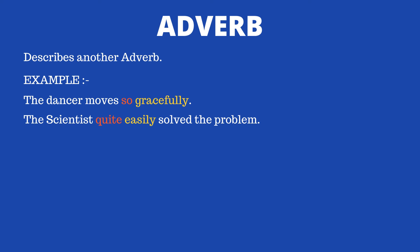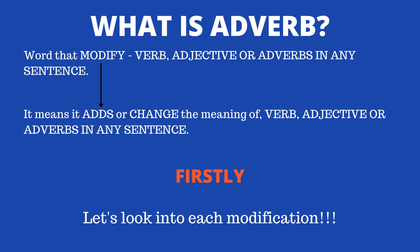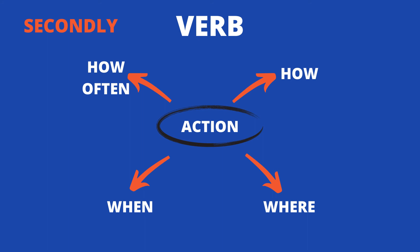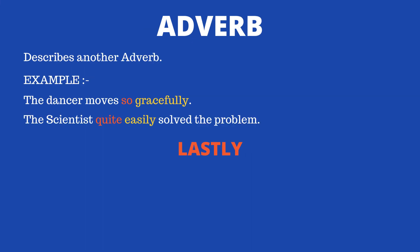Let's revise what we've covered today. First, we talked about what an adverb is. Second, we talked about the four ways an adverb modifies a verb: how, when, where, and how often. Third, we talked about how an adverb modifies an adjective. And lastly, we talked about how an adverb modifies another adverb.